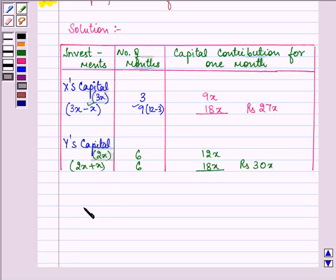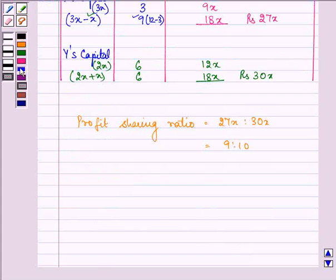So we have the profit sharing ratio equal to 27X is to 30X, that is equal to 9 is to 10.